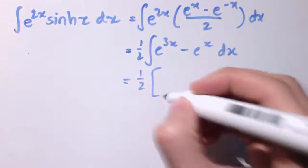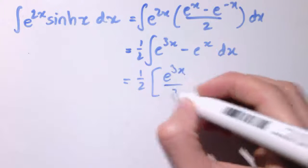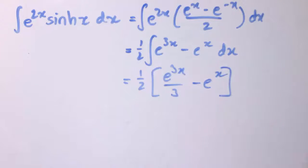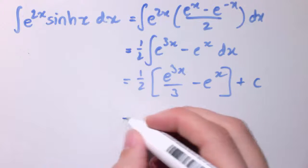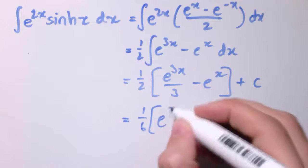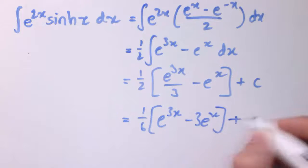So this is 1/2 times e^(3x) over 3 minus e^x, and then we can have our plus c as well. You might just write this as 1/6 times e^(3x) minus 3e^x plus c, or anything equivalent to that is the right answer. So not as hard as it may look at first, that one.